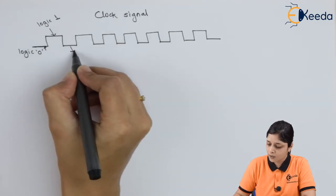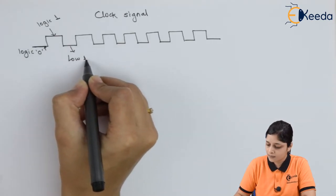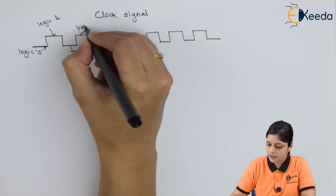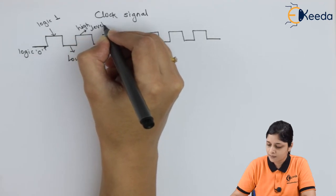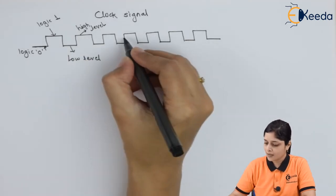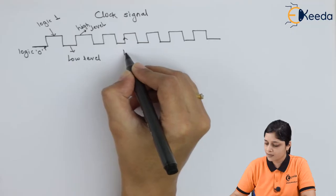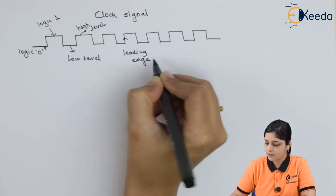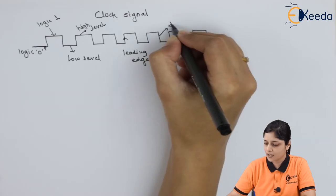It is also called the low level, and this is called the high level. One more parameter is there: this is called the leading edge, and this edge is called the falling edge.